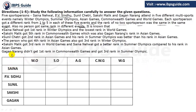In the first column, I've written Sanya, PV Sindhu, Sunil Jethani, Sakshi, and Gagan Narang — these are the players. In row one, I have arranged the games. For Sanya Nehwal's row, across Winter Olympics, Summer Olympics, Asian Games, Commonwealth Games, and World Games, she got different ranks from 1 to 5. Also, in Winter Olympics, each different person got a different rank from 1 to 5. So no row and no column will have the same number — all rows and columns will have different numbers from 1 to 5. This is exactly like Sudoku.